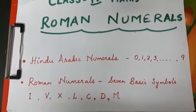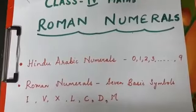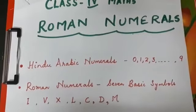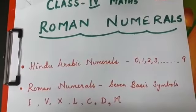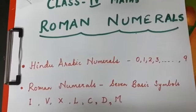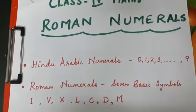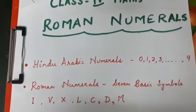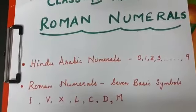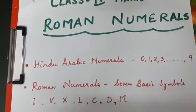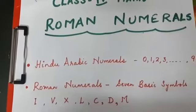From last many, many years. So they had a different system of numbers in which they basically used just seven symbols. These symbols are I, V, X, L, C, D, M. So these basic seven symbols form Roman numerals.